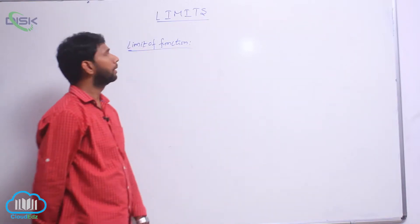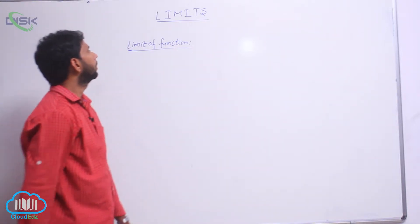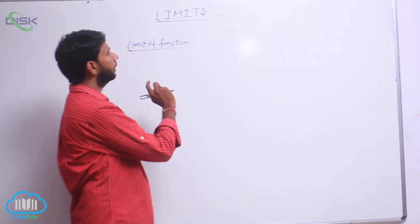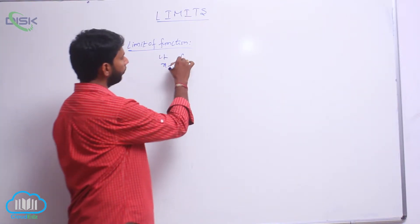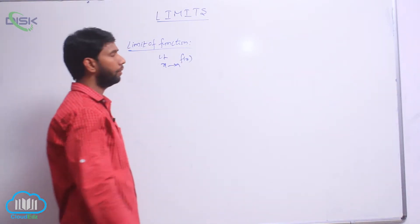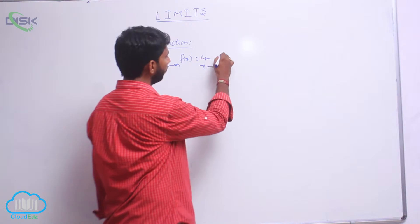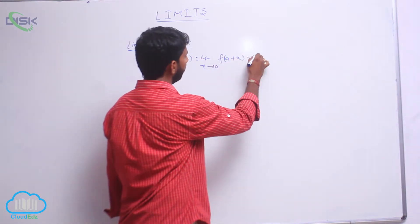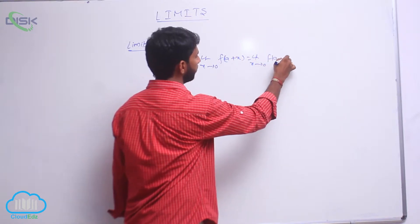Limit of the function. If the function f has a limit that exists at x equal to a, then limit x tends to a of f(x) is equal to limit x tends to 0 of f(a plus x), which is equal to limit x tends to 0 of f(a minus x).